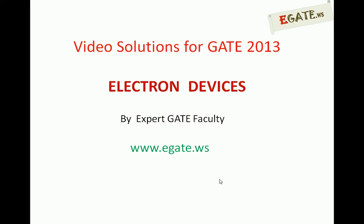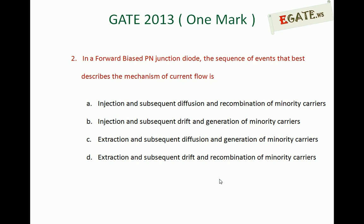We are discussing a question from GATE 2000/2013 under electron devices. In a forward biased p-n junction diode, the sequence of events that best describes the mechanism of current flow is: (a) injection and subsequent diffusion and recombination of minority carriers; (b) injection and subsequent drift and generation of minority carriers; (c) extraction and subsequent diffusion and generation of minority carriers; (d) extraction and subsequent drift and recombination of minority carriers.